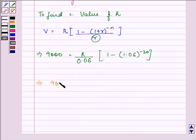That is further equal to 9000 into 0.06 equal to R bracket 1 minus the value of it is given to us in the question as 0.3119.